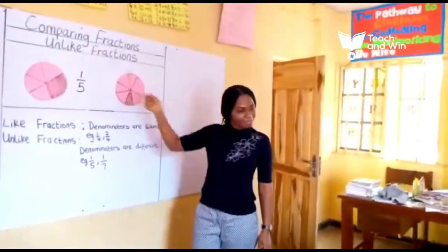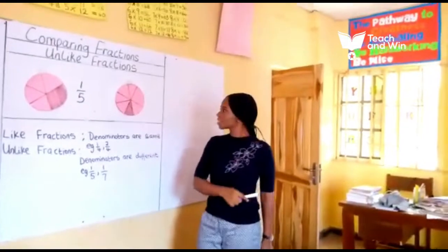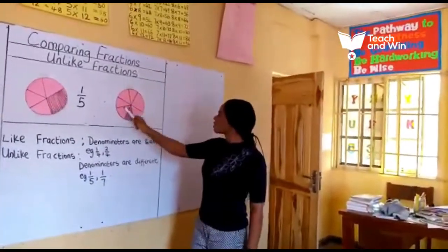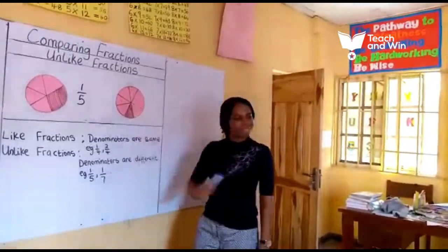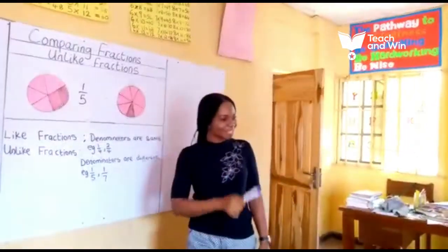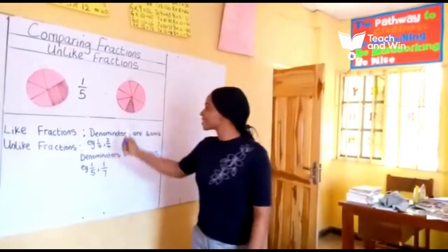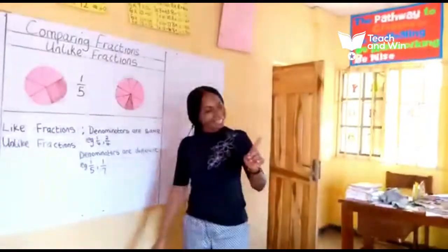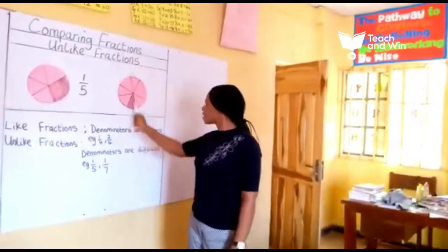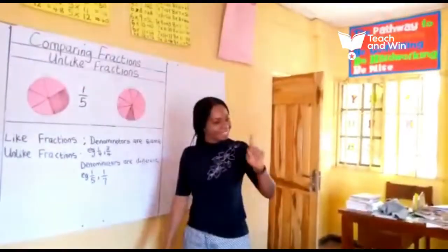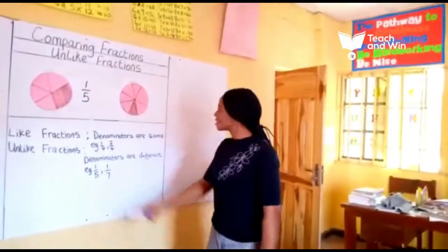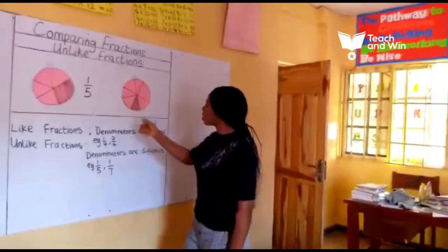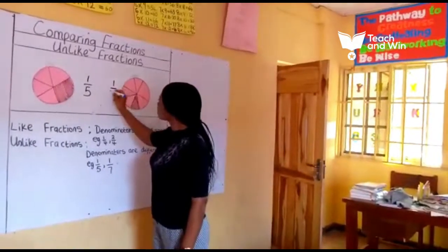Now can we count the next circle together? Let's count: one, two, three, four, five, six, seven. This circle is divided into seven parts, and I shaded one part. What this means is that this circle represents the fraction one over seven — one seventh.